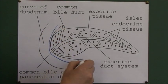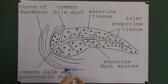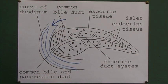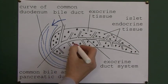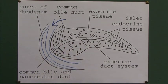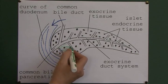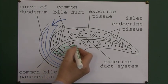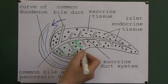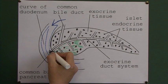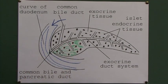Here we see the duodenum, the curl of the duodenum going around here. This would be coming from the pyloric area of the stomach. And all these dots here are the pancreatic islets — about a million of them in the pancreas. The tissue in between is the exocrine tissue containing the acinar cells, producing the exocrine secretions, which are the digestive enzymes. When the digestive enzymes are produced, they go down the pancreatic duct here into the lumen of the duodenum.